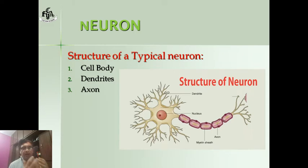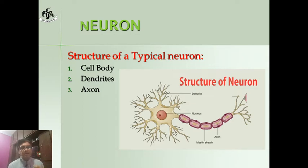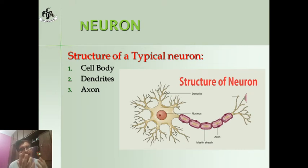Dendrites and axon are actually the extensions or elongations of the neuron. The short elongations are called dendrites. Through dendrites, the nerve impulse enters into a neuron. The nerve impulse is the message carried in the neuron in the form of an electrochemical wave.